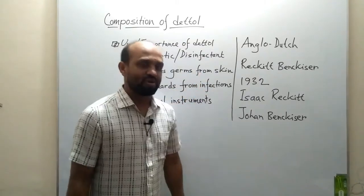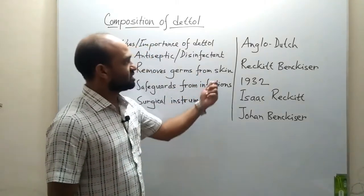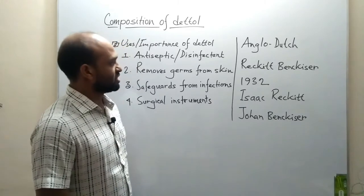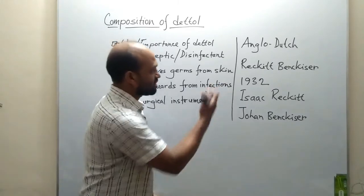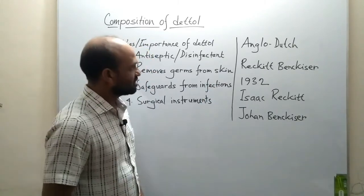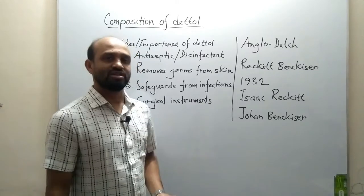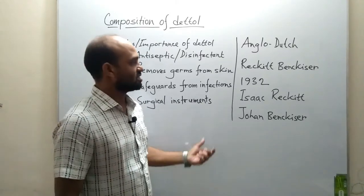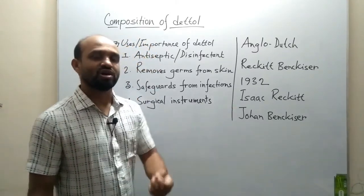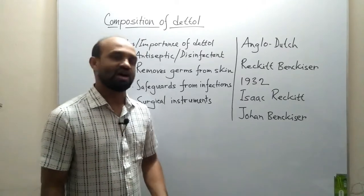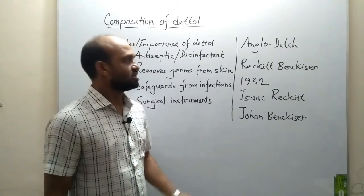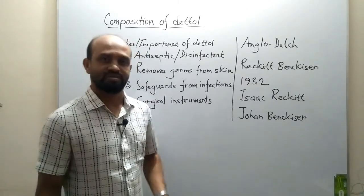The Anglo-Dutch company Reckitt Benckiser introduced the first Dettol in the year 1932. Here, Reckitt is actually Isaac Reckitt and van Kaiser is Johan van Kaiser — they are the founders of the company Reckitt van Kaiser.